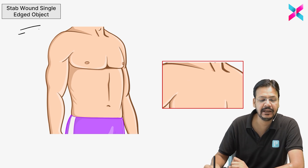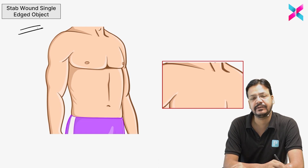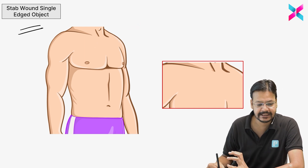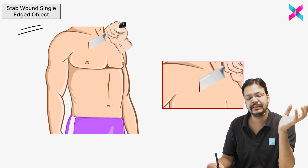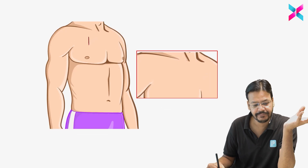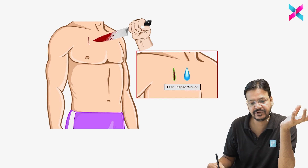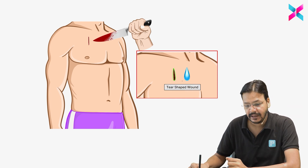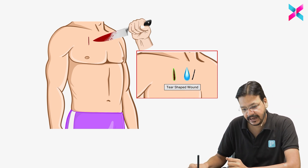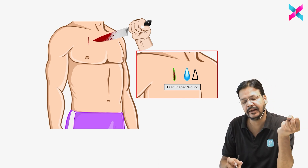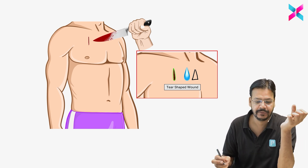This is a single-edge weapon. You can see the injury — it is a stab injury. This stab injury is either tear-shaped, triangular, or wedge-shaped: one angle is acute and the other is broad. This indicates a single sharp-edge weapon.